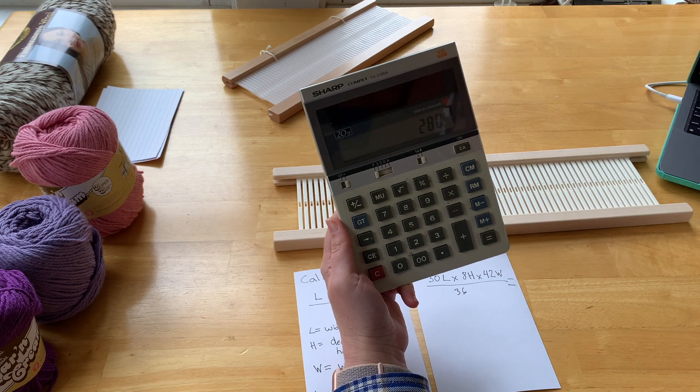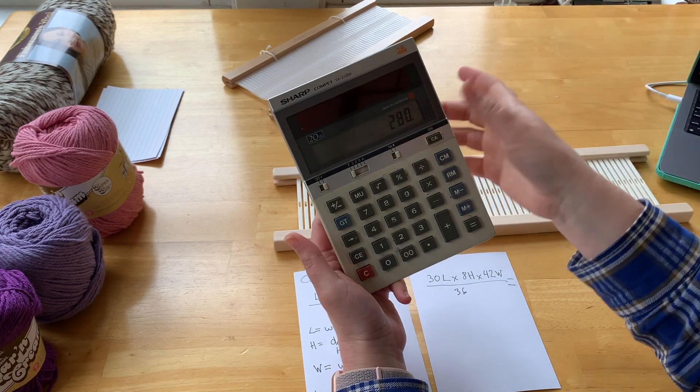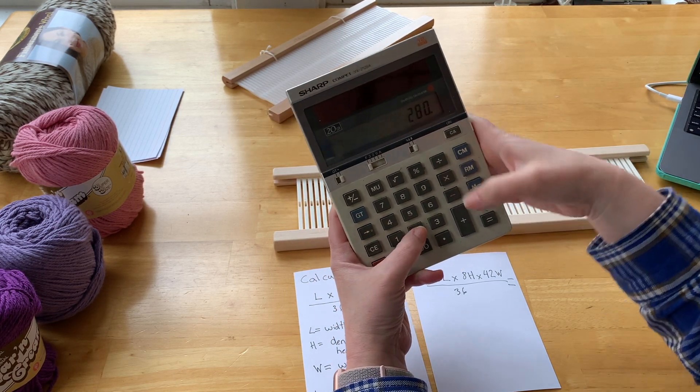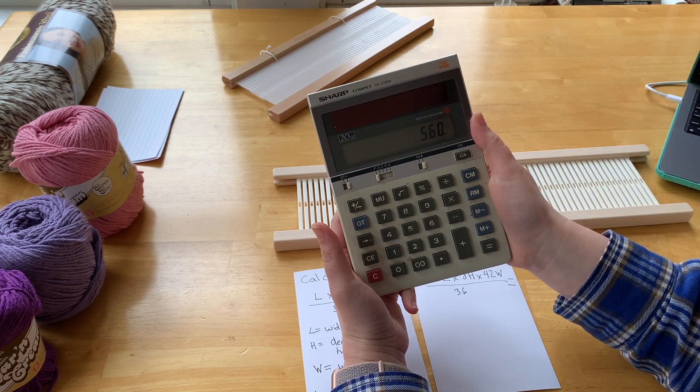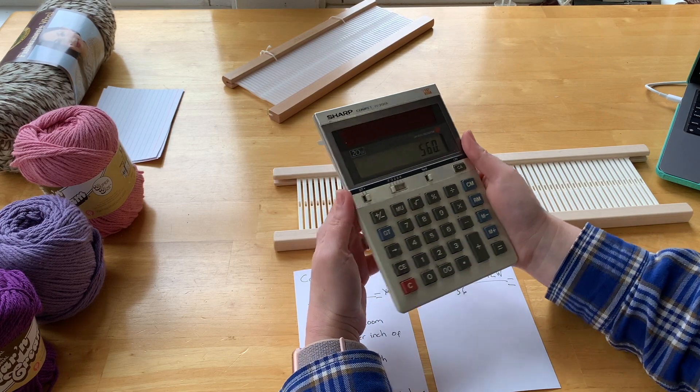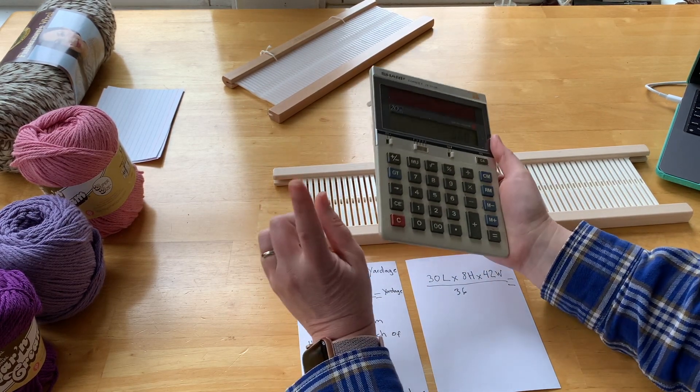So typically what I do is I buy the same amount or calculate for the same amount as weft as warp. So in which case, you just have to times this number by 2, and that gives me 560 yards that I'll need for my complete project with plenty left over just in case mistakes are made.